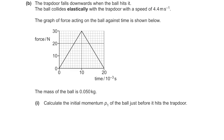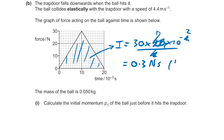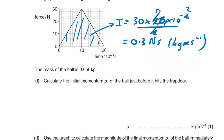Question 17: we have a force-time graph. We need the area under the graph, which equals the impulse. That's ½ × 30 N × 20 × 10⁻³ s = 0.3 N·s (or kg·m/s).